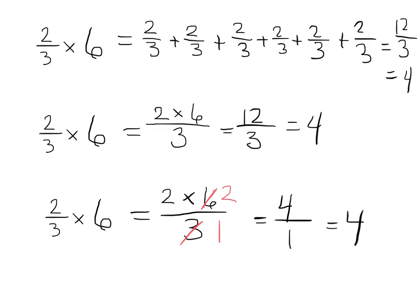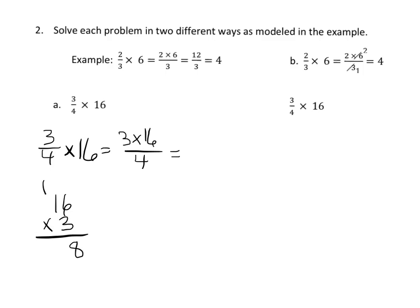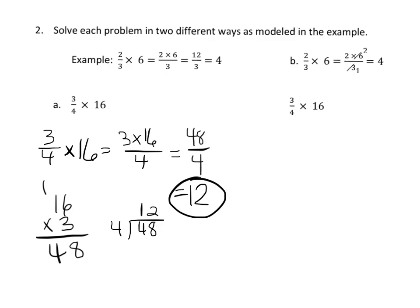So we have three different ways to think of this multiplication problem: repeated addition, which is just a launching pad; multiplying first then reducing; and reducing first then multiplying. Our goal is those last two methods. Let's put this into practice. For 3/4 times 16: that's 3 times 16 over 4. And 3 times 16 is 48, so our numerator is 48 and our denominator is 4. 48 divided by 4 is 12, so our answer is 12.